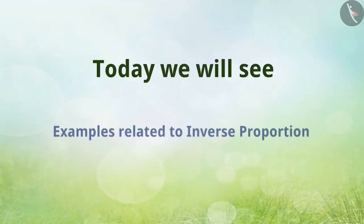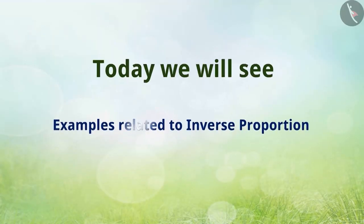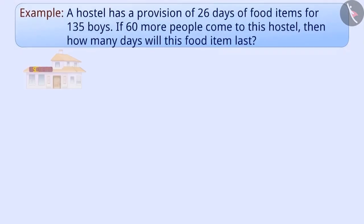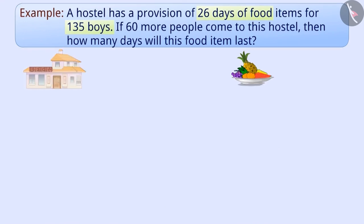Today we will see examples of inverse proportion. A hostel has a provision of 26 days of food items for 135 boys. If 60 more people come to this hostel, then how many days will this food item last?